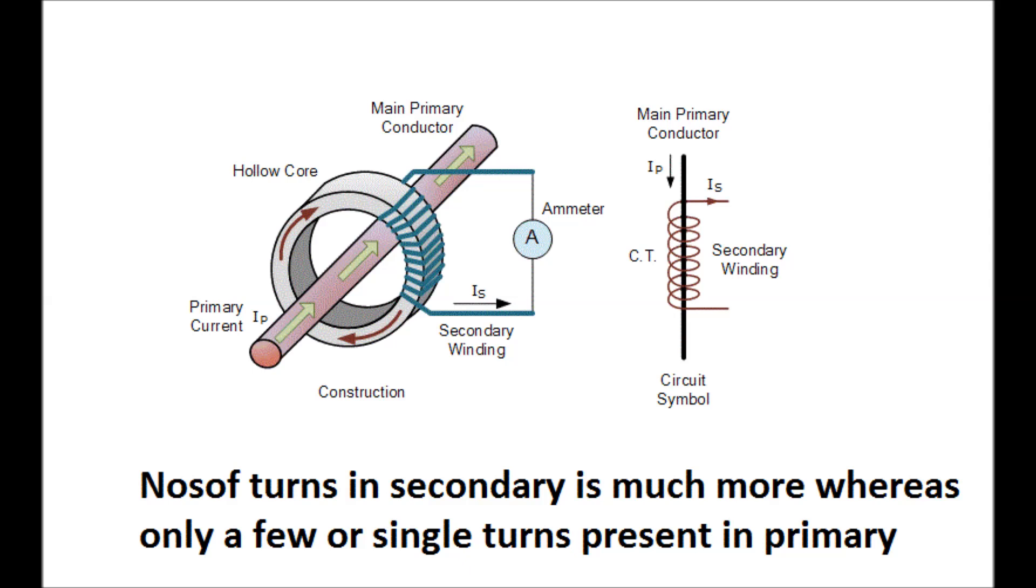The diagram of a CT working placement has shown in this figure. In this figure, IP is the primary current, IS is the secondary current. You can see there is a hollow core and primary current is flowing through a single turn or a few turns and there is a number of turns in the secondary winding.